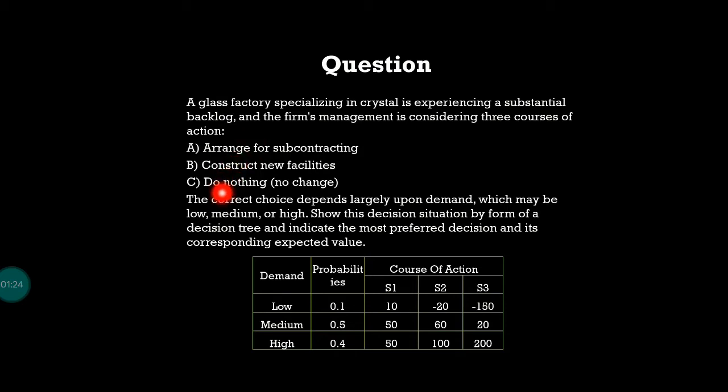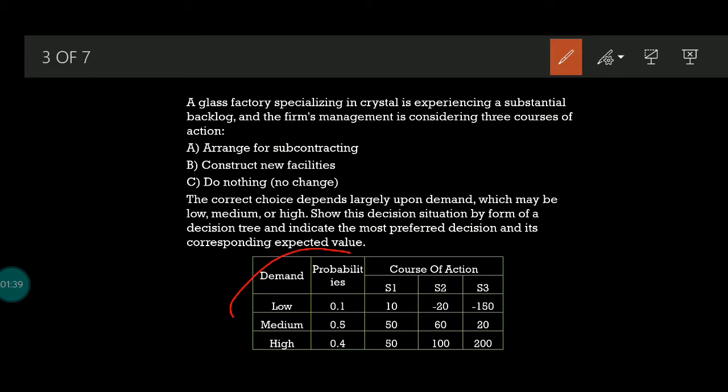S1 is arranged subcontracting, S2 is construct new facility, and S3 is do nothing. Which one should they choose - S1, S2, or S3? You have to do this with the help of a decision tree. They already gave us the payoff table.